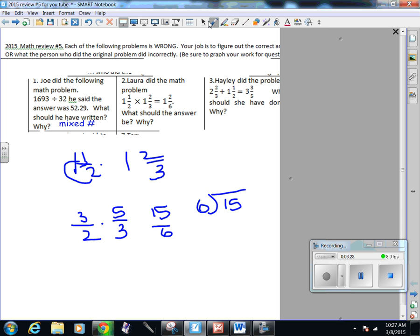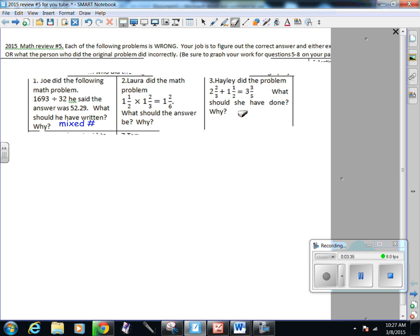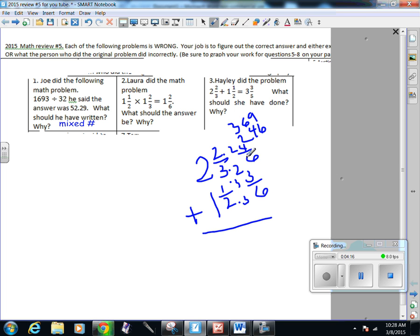Number three says that Haley did this math problem, what should she have done? So the problem is 2 and two thirds and 1 and one half. So I remember when I'm adding fractions, I have to have a common denominator. So I list the multiples of 3: 3, 6, 9, and then the multiples of 2, which are 2, 4, 6. And the first one that they have in common is 6, so the common denominator is 6. So I need to make equal fractions. So that's times 3, so that's times 3, and equal fractions, that's times 2, so that's times 2.